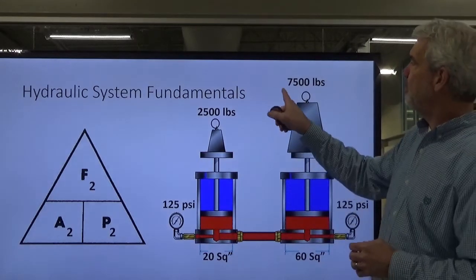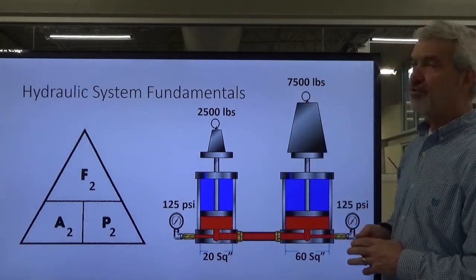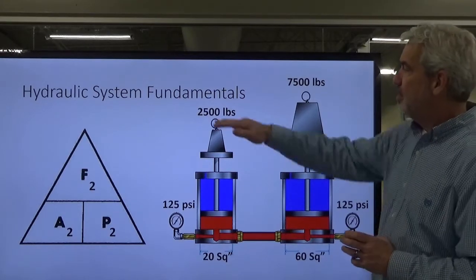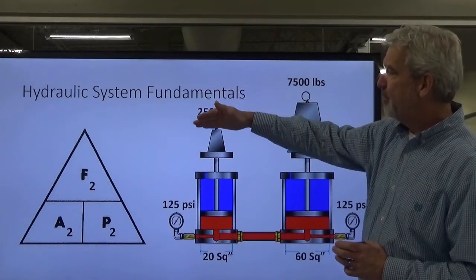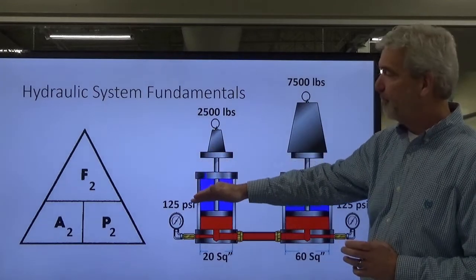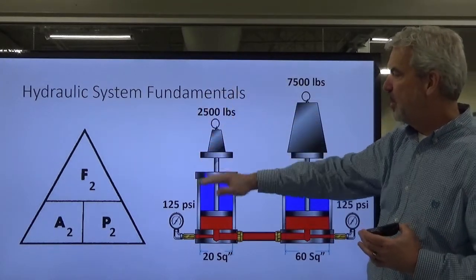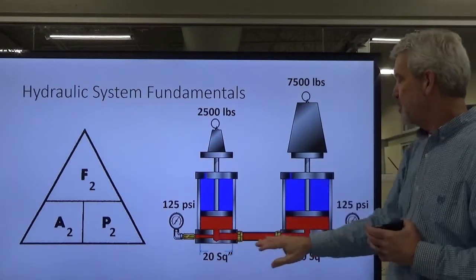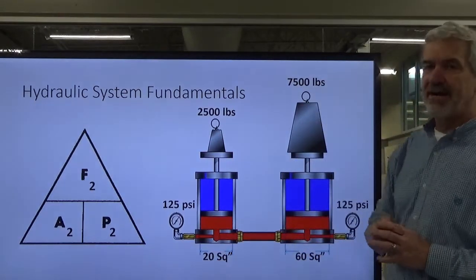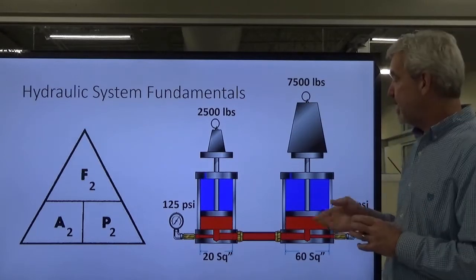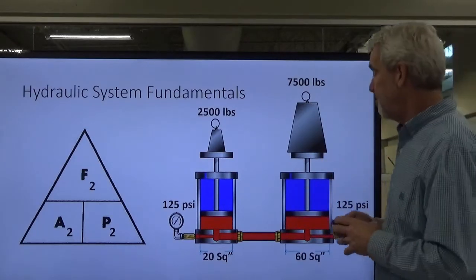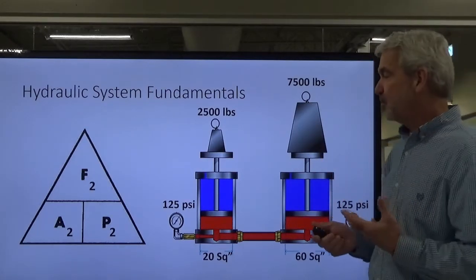And we wind up creating 7,500 pounds of force by 2,500 pounds of input force on the first cylinder. In other words, 2,500 pounds of force on the first cylinder at 20 square inches creates a 7,500 pound force that the second cylinder can raise or move.